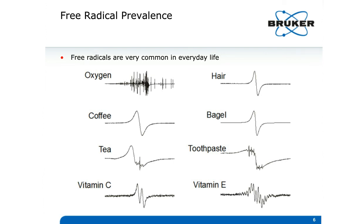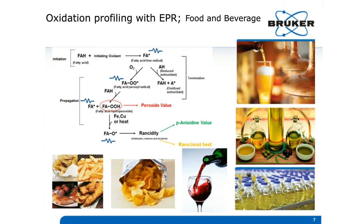Many of the foods we eat and beverages we drink contain free radicals — wine, beer, and edible oils, for example. Currently, edible oil shelf life is tested with the Rancimat test, which tests for acidity as shown by the diagram. But with EPR, we can test whenever there is a lone electron, as indicated in the graphic by the blue signal symbols, and we don't have to wait until the end of the process.